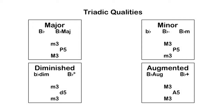An augmented triad is indicated with a capital letter followed by the letters AUG, or a capital letter followed by a plus sign. An augmented triad is constructed by placing a major third between the root and the third, and another major third between the third and the fifth. Two major thirds added together creates an augmented fifth.